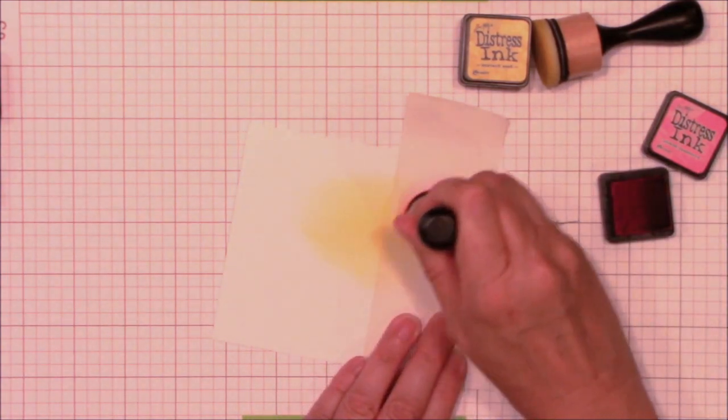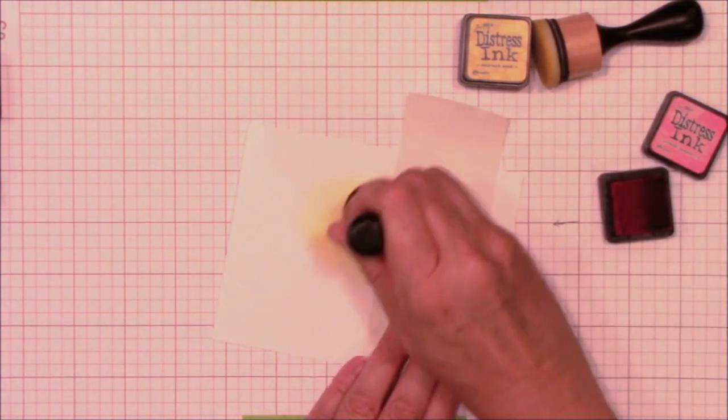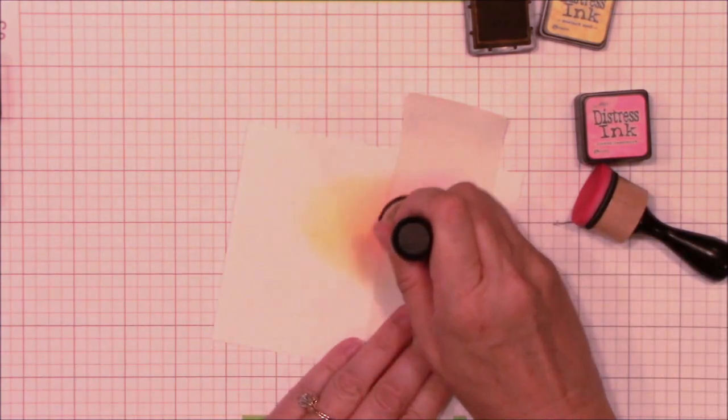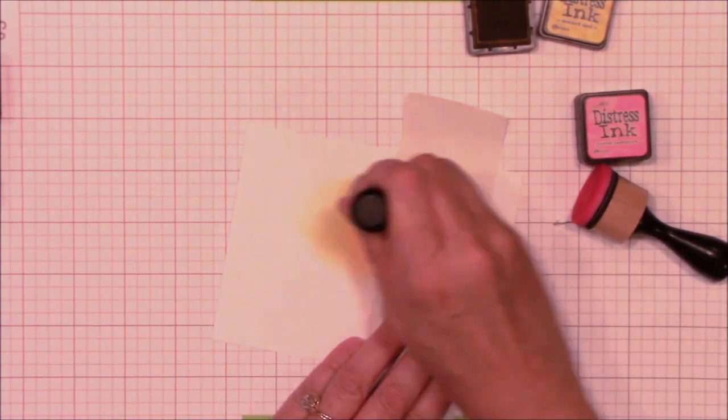I'm doing some simple ink blending first with some mustard seed distress ink and then I'll add some picked raspberry. I'll finish it off with another layer of mustard seed just to help those two colors blend seamlessly. You end up with a beautiful sunset.